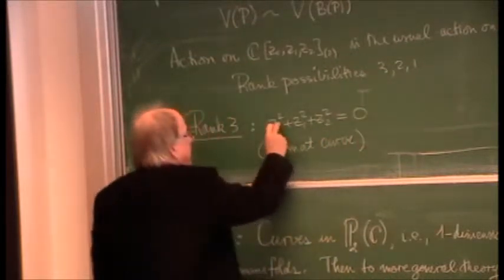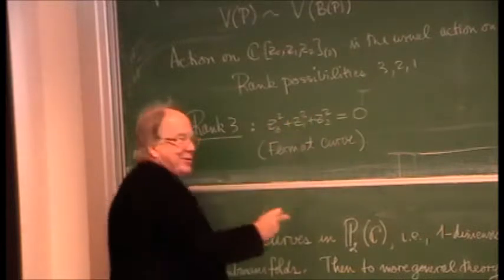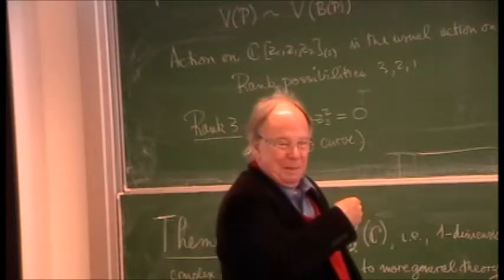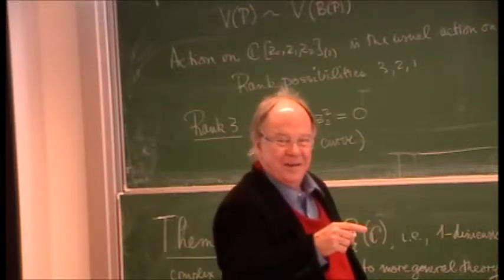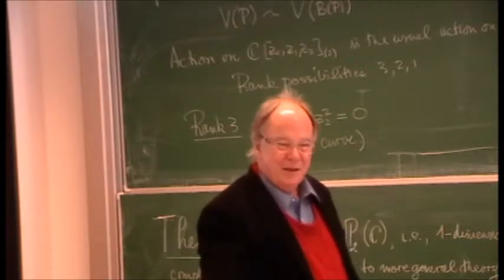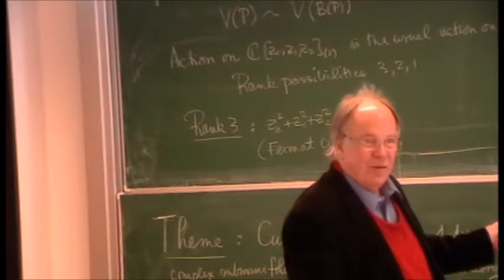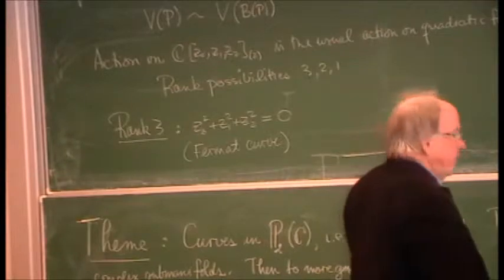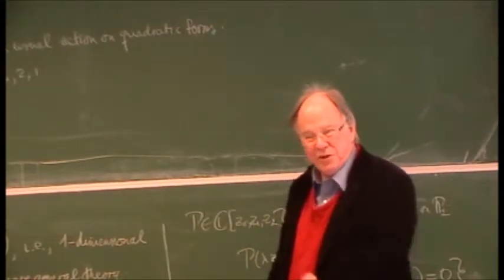A Fermat curve is, for any degree n: z₀ⁿ + z₁ⁿ + z₂ⁿ = 0. In this case it's degree two. This whole business about the Fermat conjecture relates to this — for degree two you get Pythagorean triples like 2² + 3² = ... well, 3² + 4² = 5², so there are lots of integral solutions. Maybe the geometry behind it is playing a role in the Fermat question.